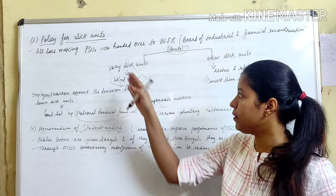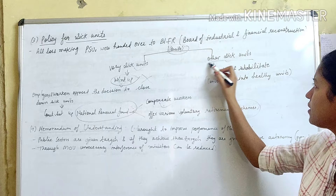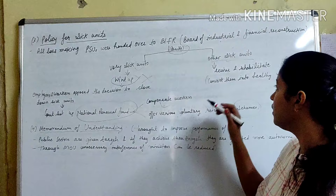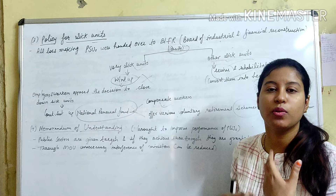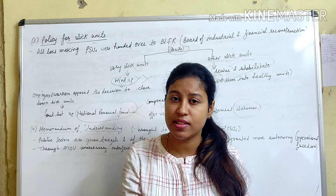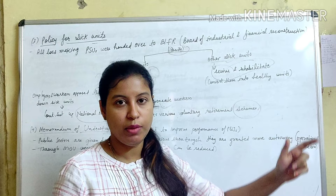Very sick units were closed down. However, for units that were making losses but had a chance of recovery, the government would revive and rehabilitate them — making changes so they could become profitable again and convert sick units into healthy units.